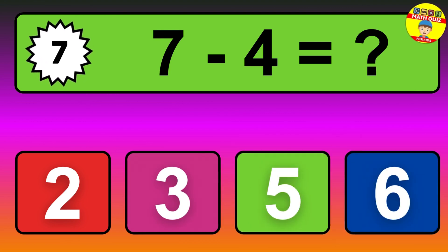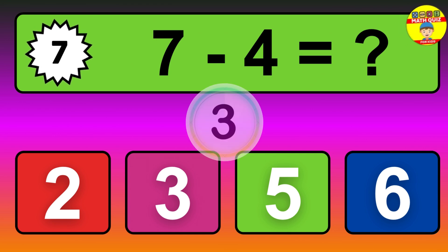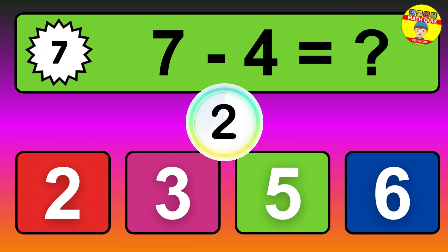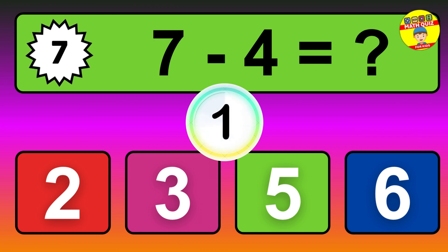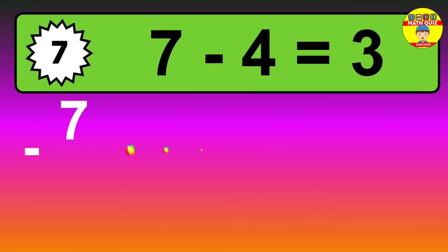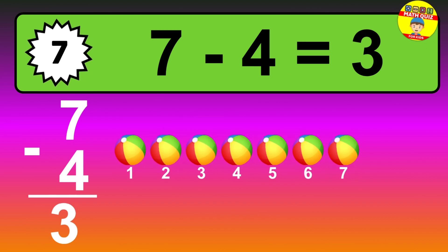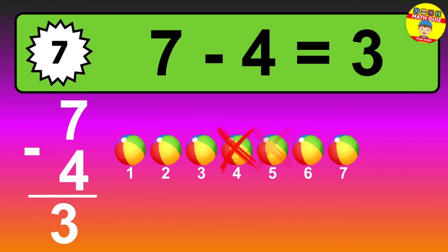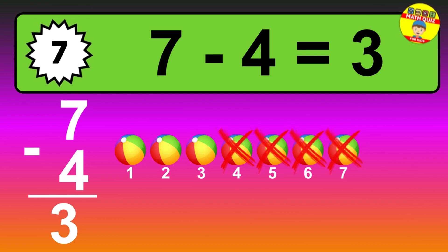Question seven: seven minus four equals what? The answer is seven minus four is three. Let's count it: one, two, three.